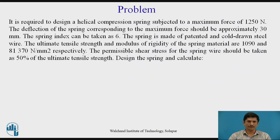Let us see the problem. It is required to design a helical compression spring subjected to a maximum force of 1250 Newton. The deflection of the spring corresponding to the maximum force should be approximately 30 mm. The spring index is C = 6. The spring is made of patented cold drawn steel wire, for which the ultimate tensile strength and the modulus of rigidity of the spring material are 1090 and 81370 Newton per mm square respectively.